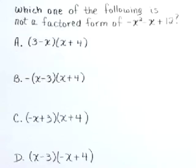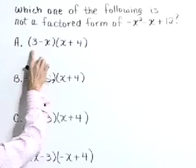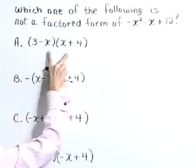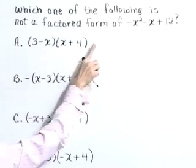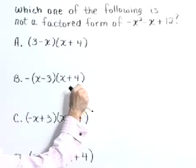Which one of the following is not a factored form of negative x squared minus x plus 12? Here we have four options: a, b, c, and d. I'm just going to walk through each of these and multiply our values together and then compare to our given trinomial.